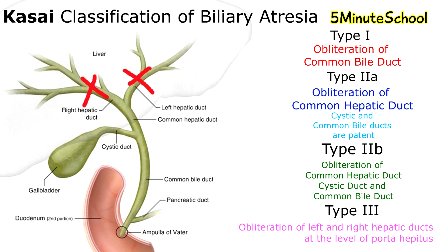That's everything you need to know for the Kasai classification. Type 3 is considered to be the most common form of Biliary Atresia — in approximately 90% of cases, it is a type 3 form according to the Kasai classification. That's all for this video; if you have any questions, leave a comment in the comment section below.